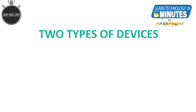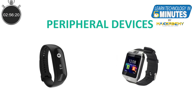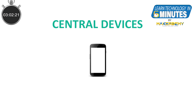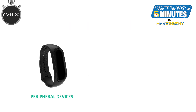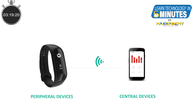In BLE, there are two types of devices: the peripheral device and the central device. The peripheral devices are typically constrained devices that need to conserve energy. The central device is typically the device with more processing power and memory where much of the processing gets done. For example, your fitness tracker is the peripheral device and your mobile phone that syncs with it is the central device, which processes and displays the data in a dashboard for you to view.